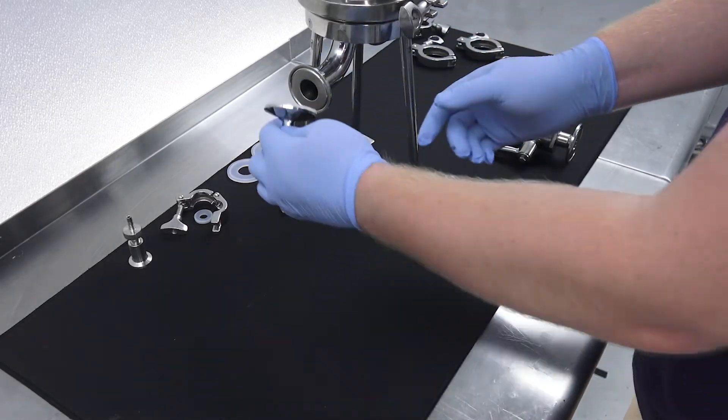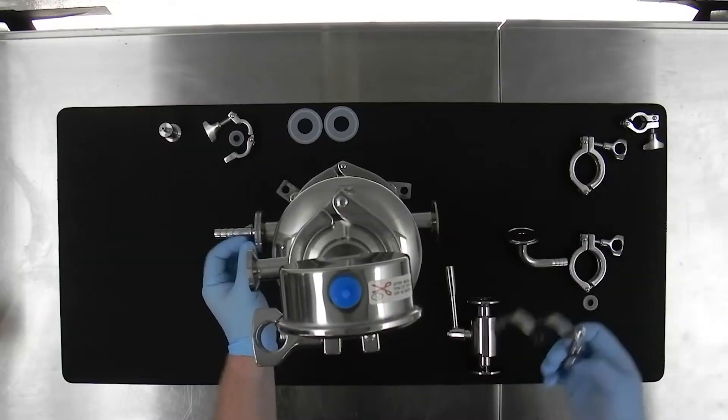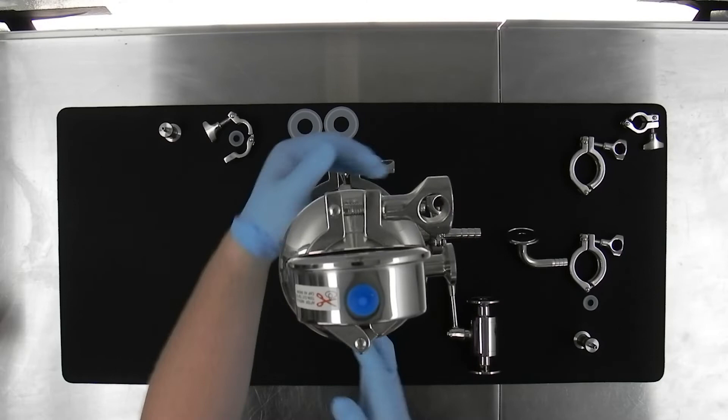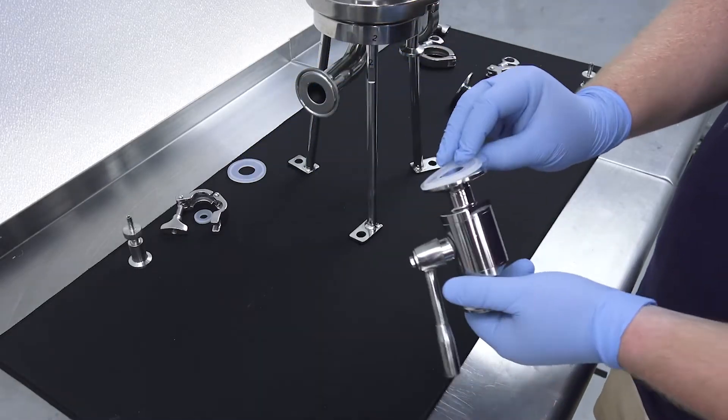We install a hose barb adapter on the inlet side of the filter housing. We install an outflow valve on the outlet side of the filter housing.